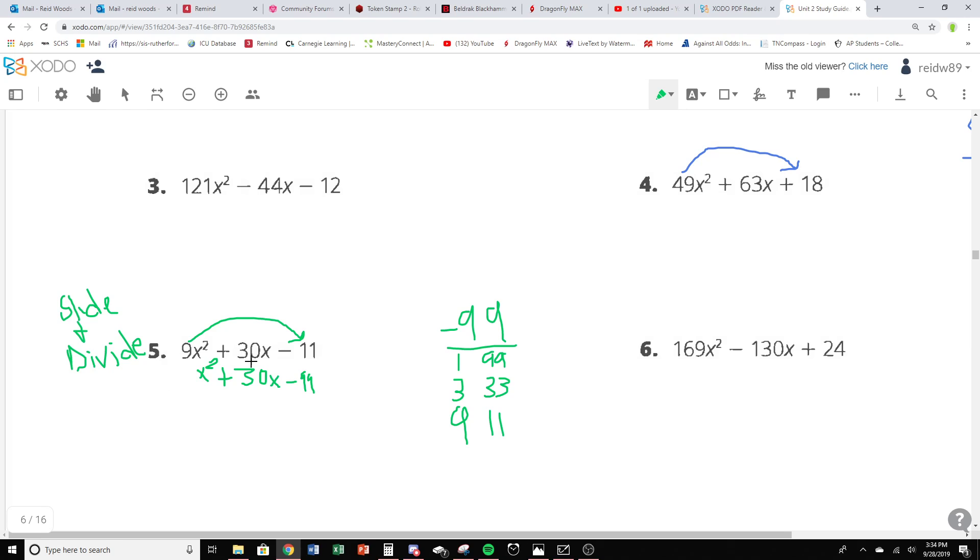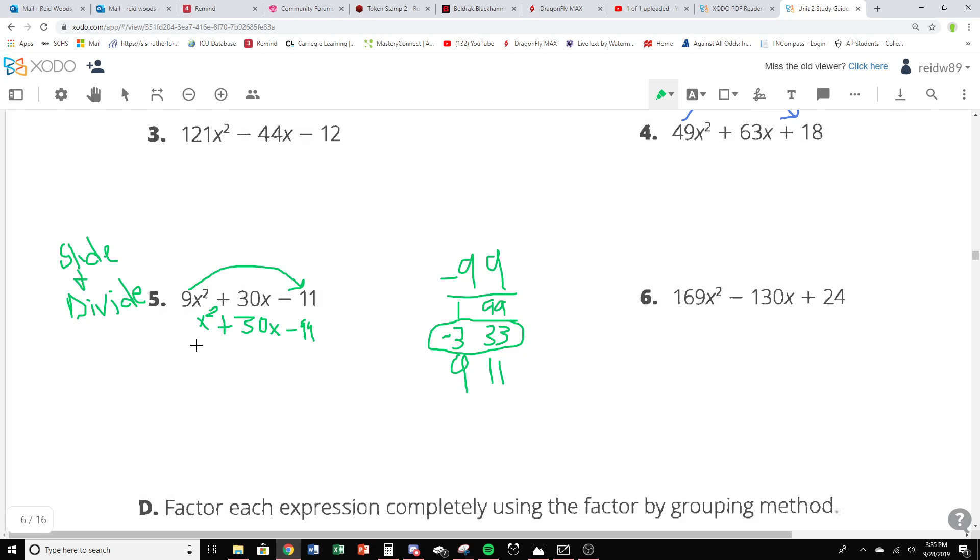But which ones are going to add to give me this middle value, this positive 30? Well, it looks like it's going to be 3 and 33 because the difference between them is 30. And we know that we're dealing with a negative 99 here. So one of these has to be negative. And it's actually going to be this 3. So these are going to be our factors, or the start of them at least. So this is (x - 3) and (x + 33).